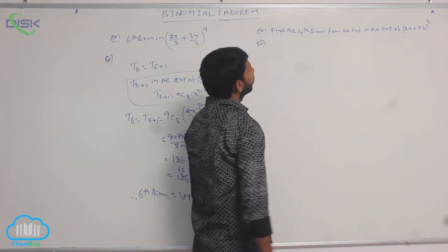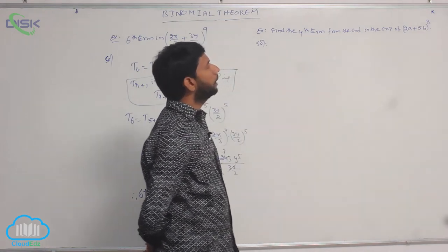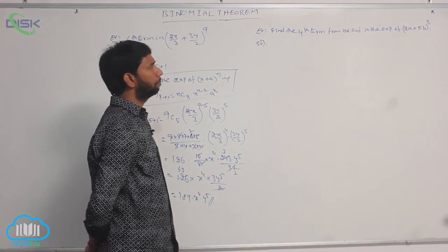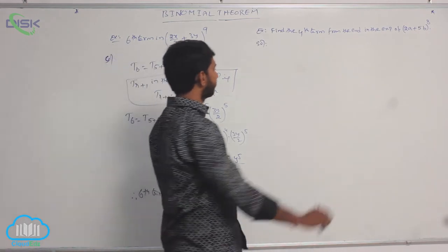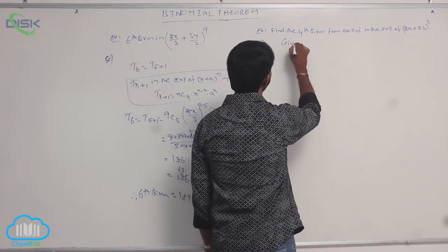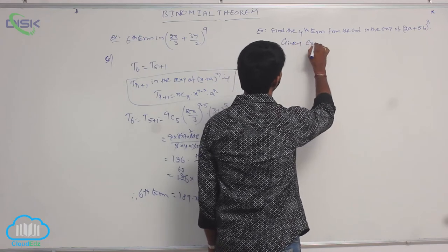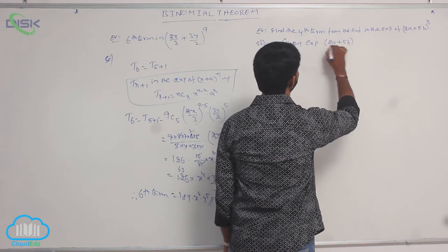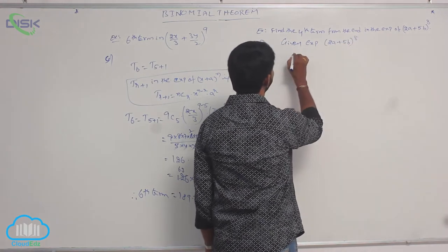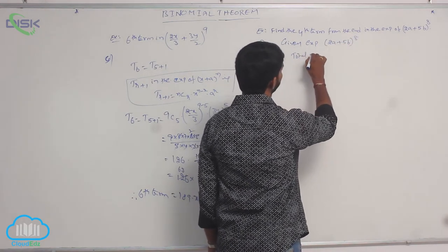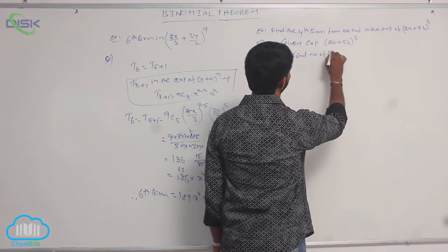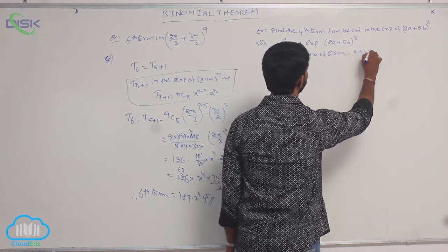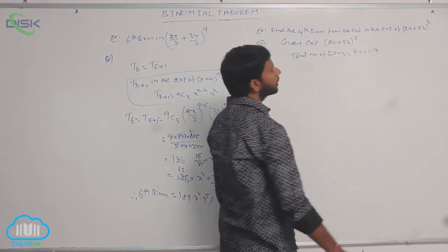Next example: Find the fourth term from the end in the expansion of (2a + 5b)^8. The total number of terms is n + 1 = 8 + 1 = 9.